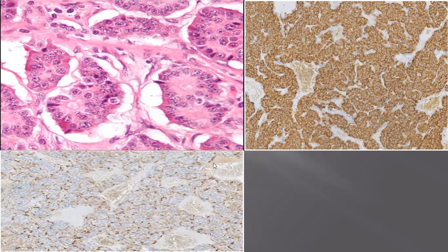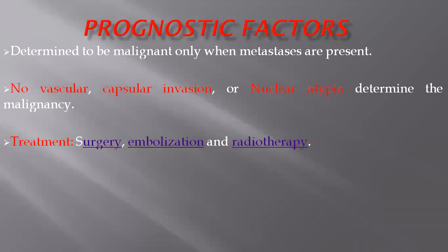In terms of prognostic factors, it is very important to remember that paragangliomas are mostly benign, but they become malignant only when they metastasize. The only criterion for malignancy in paraganglioma is metastasis — neither vascular invasion, capsular invasion, nor nuclear atypia can determine whether it is benign or malignant. Even benign paragangliomas can invade the capsule, invade vasculature, or show nuclear atypia. Histologically, there is no determination of malignancy other than metastasis.